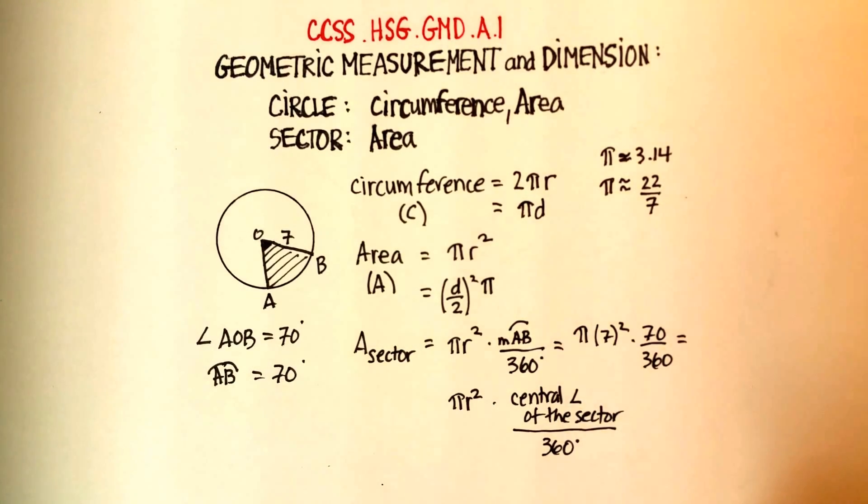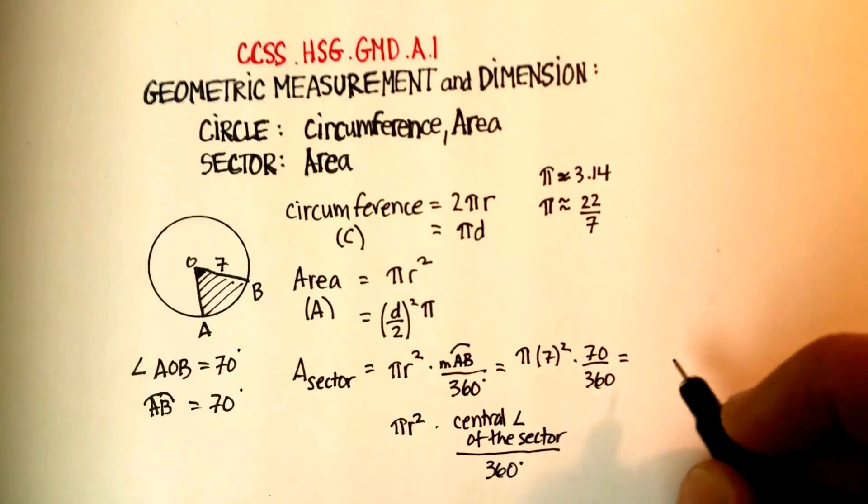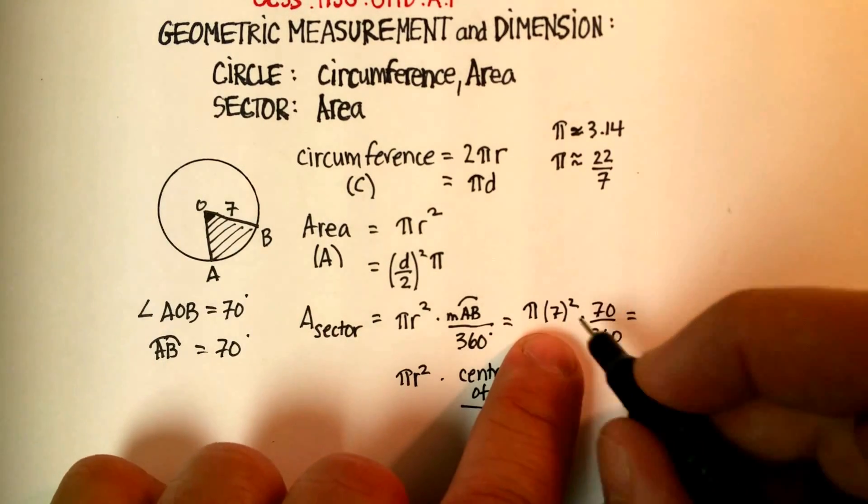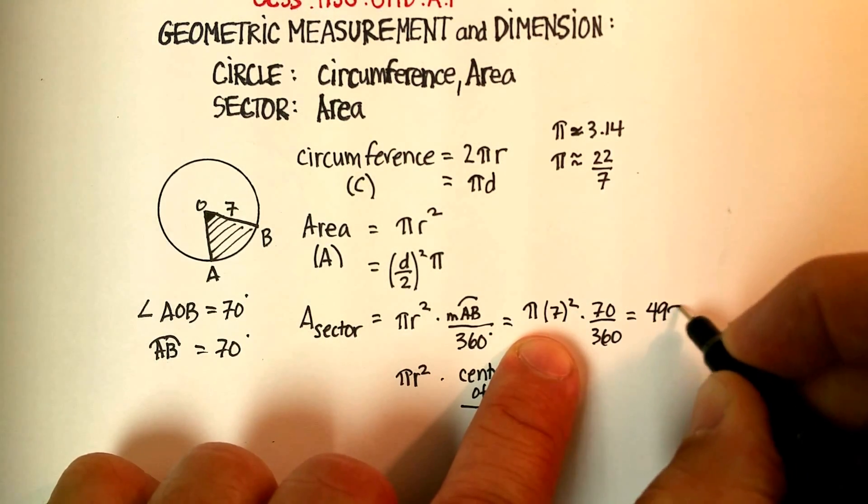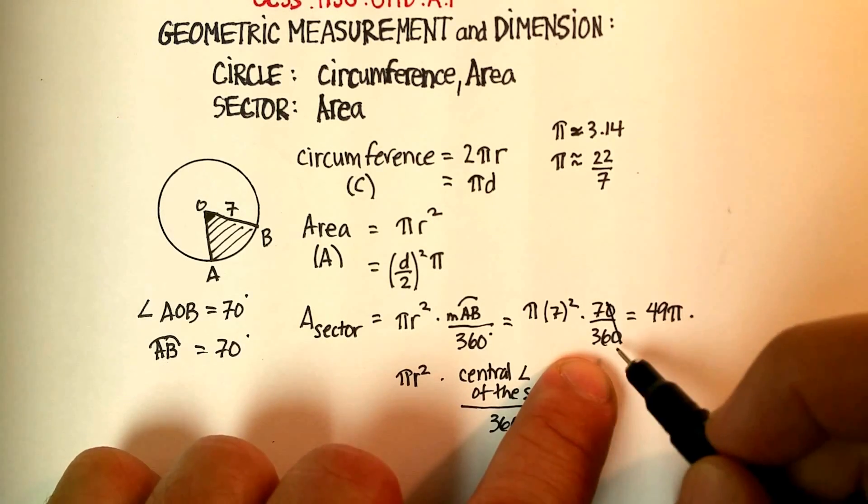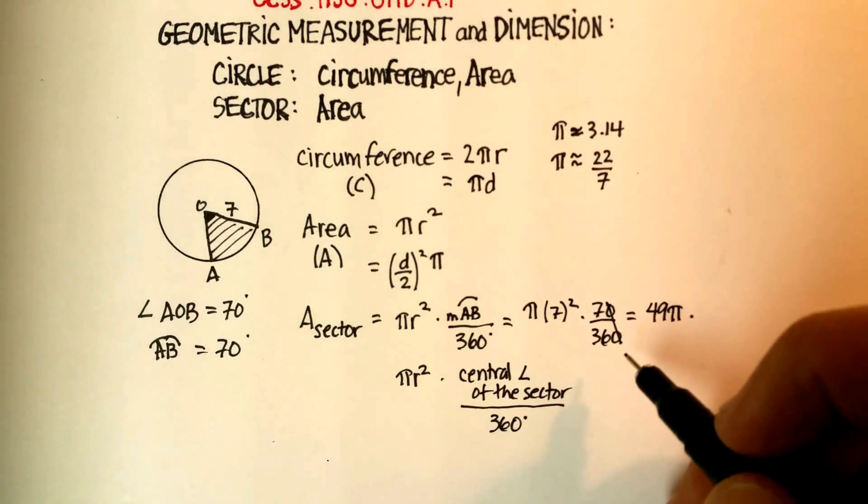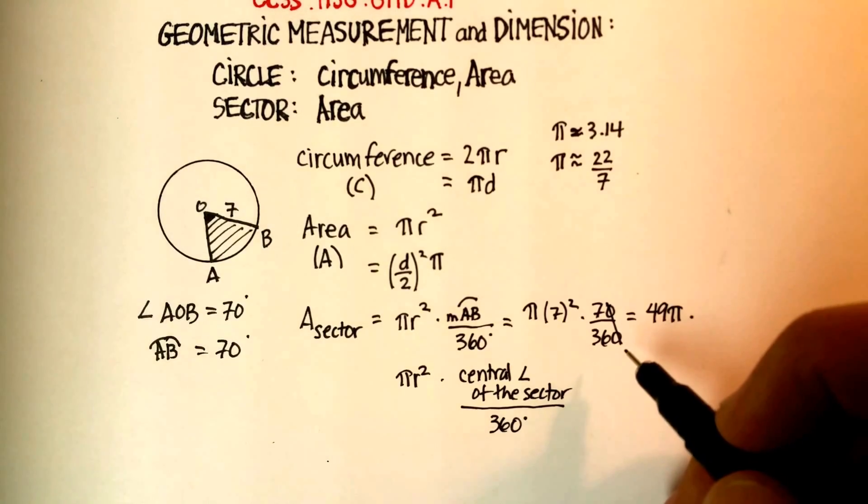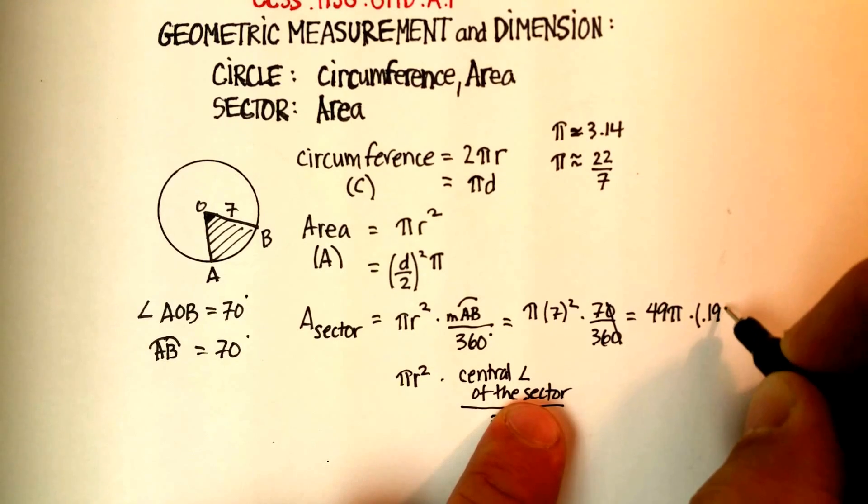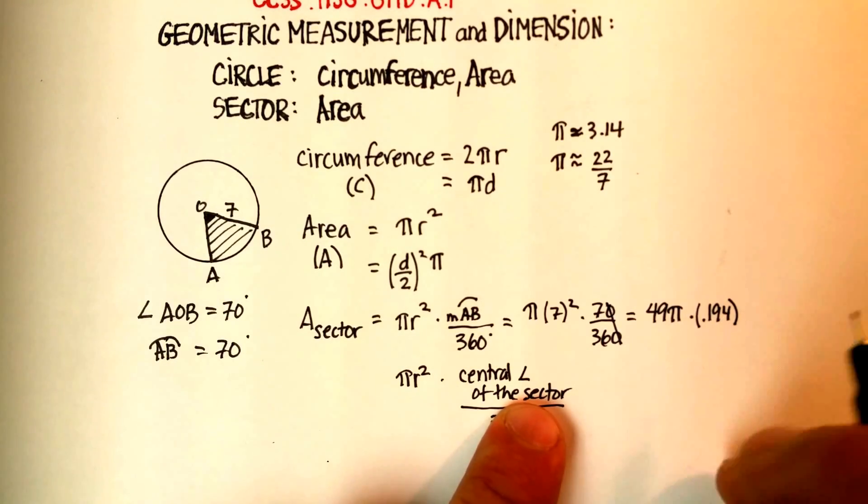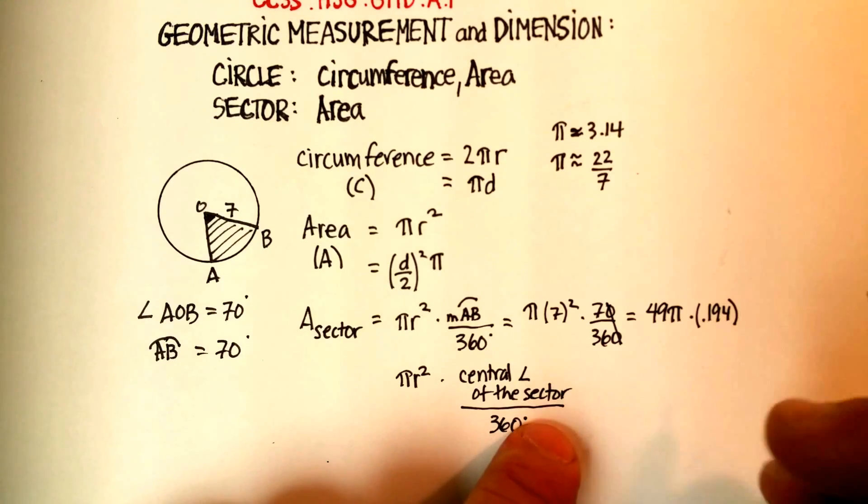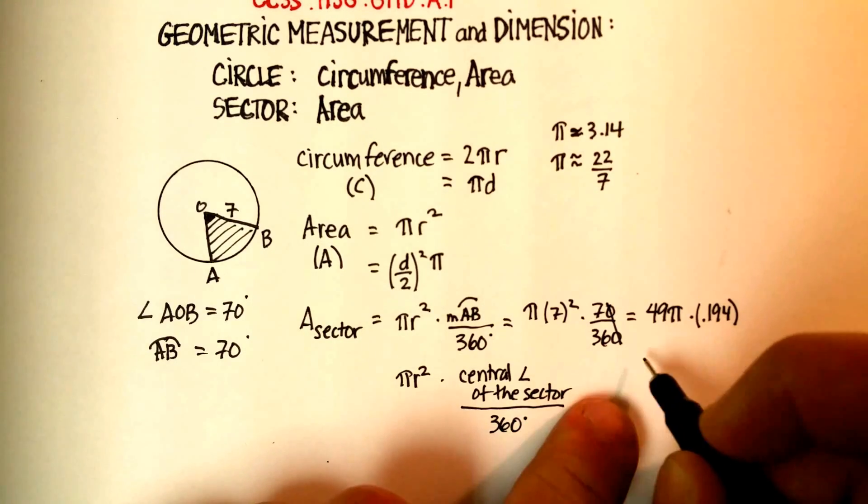And that's going to get us, let me see my calculator real quickly. That's going to give us 49π times 70 divided by 360 or seven divided by 36, which is 0.1944 repeating, and then times that by 49, 9.53π.